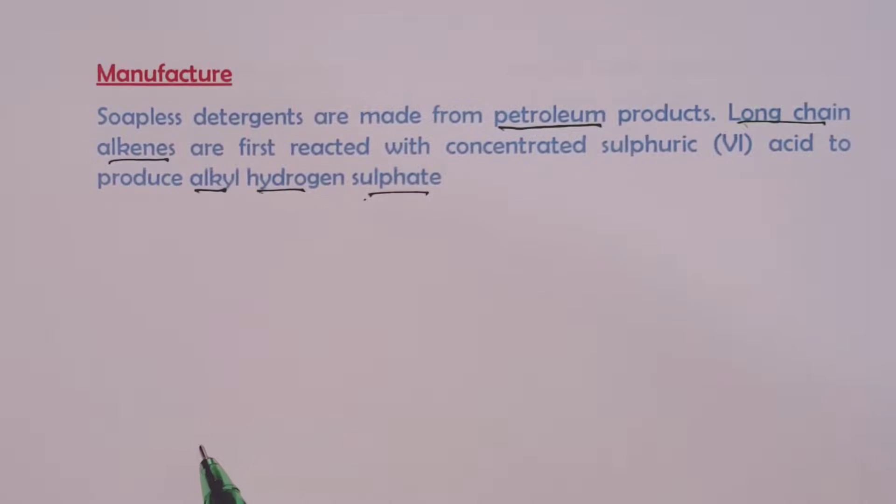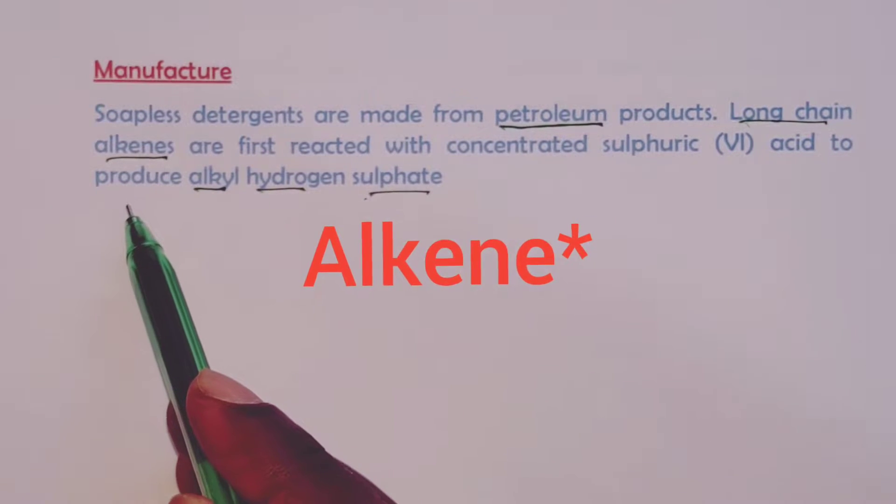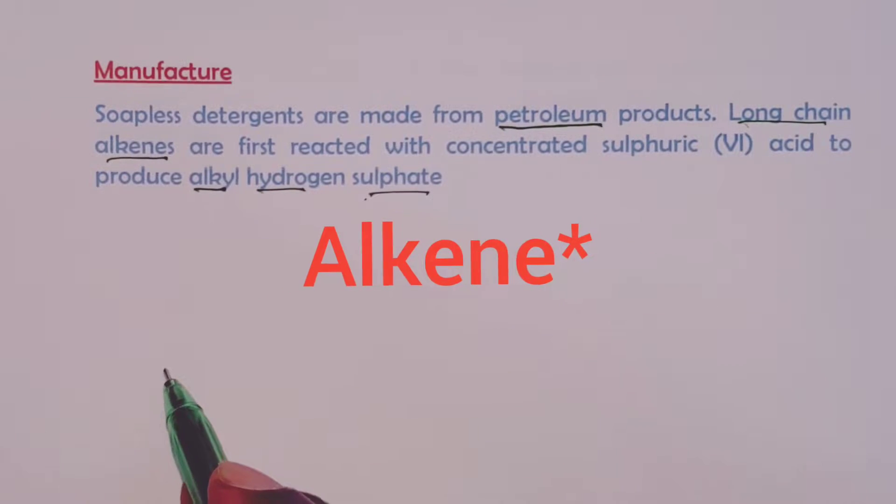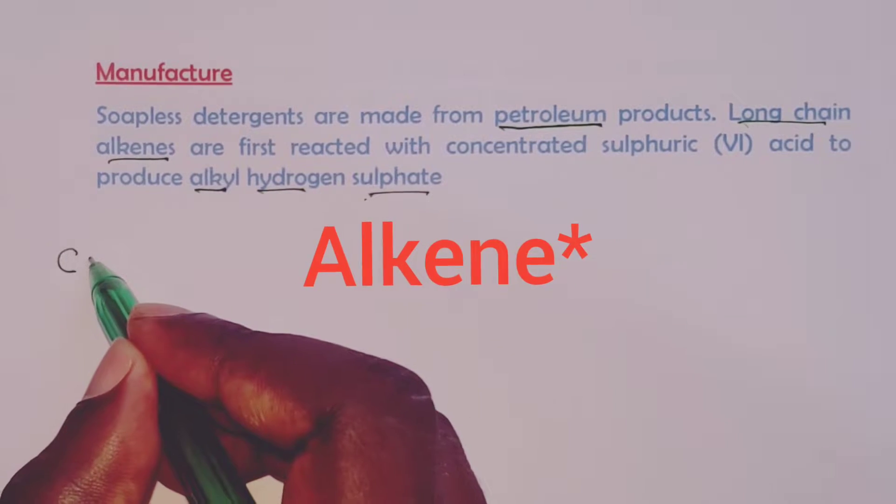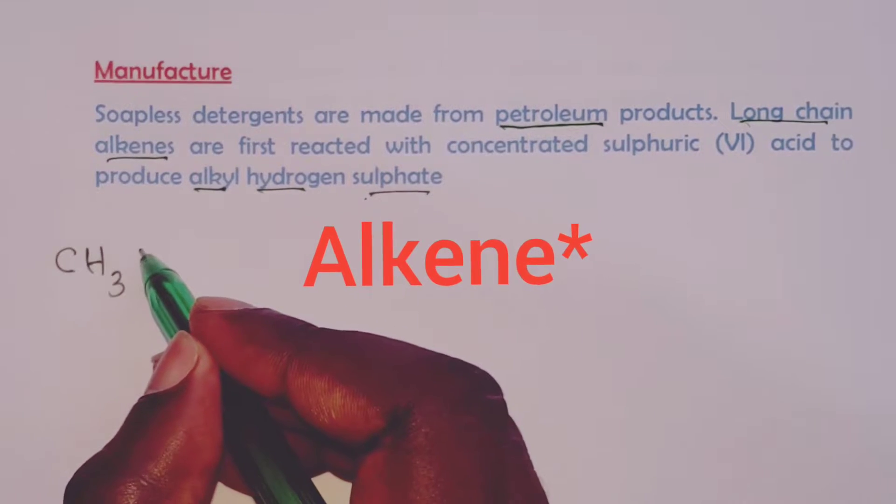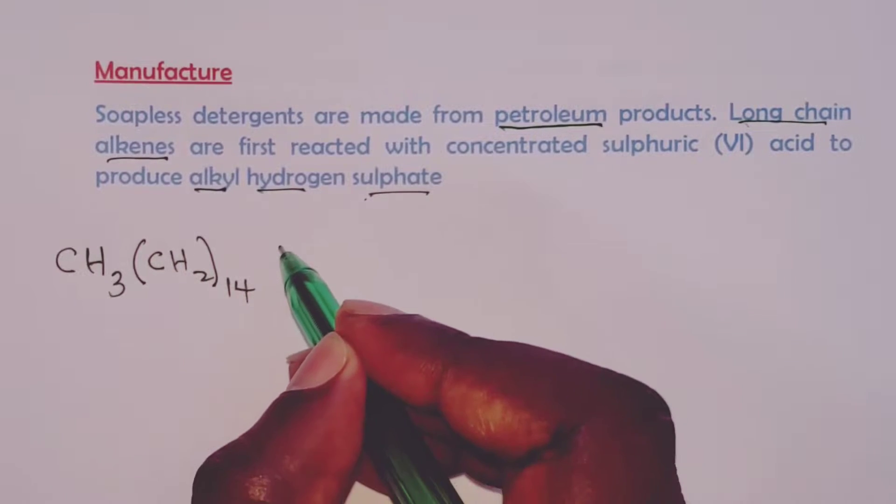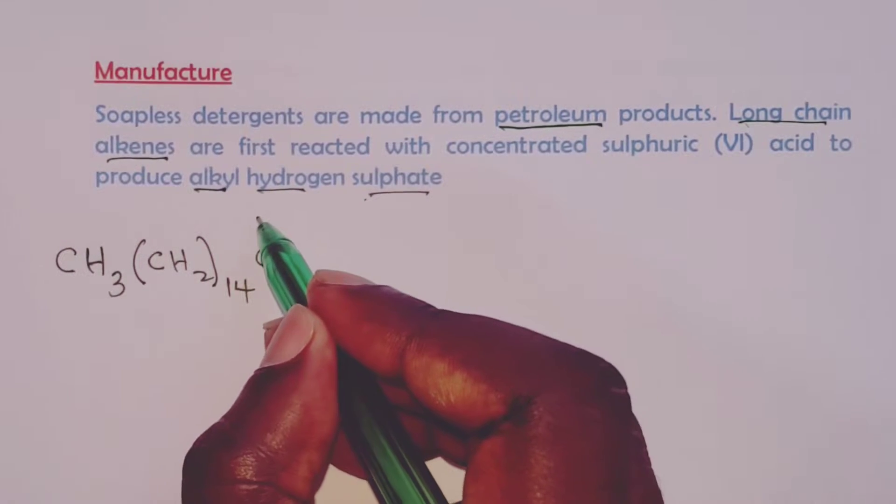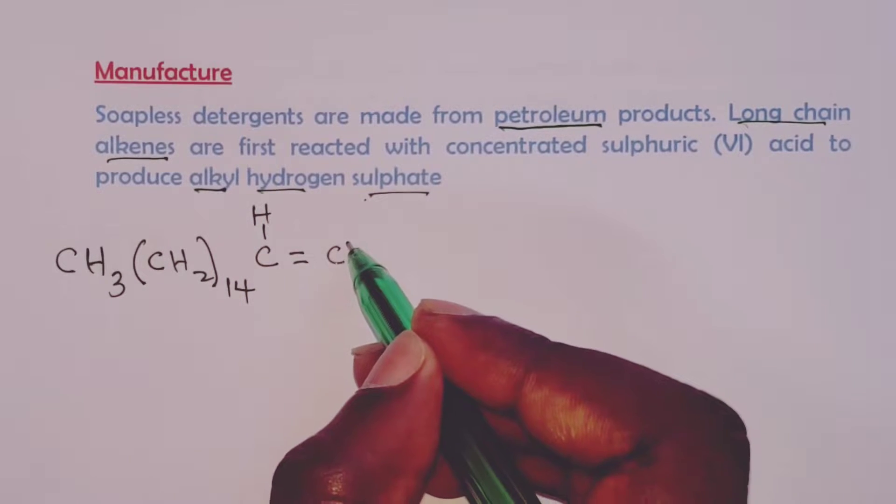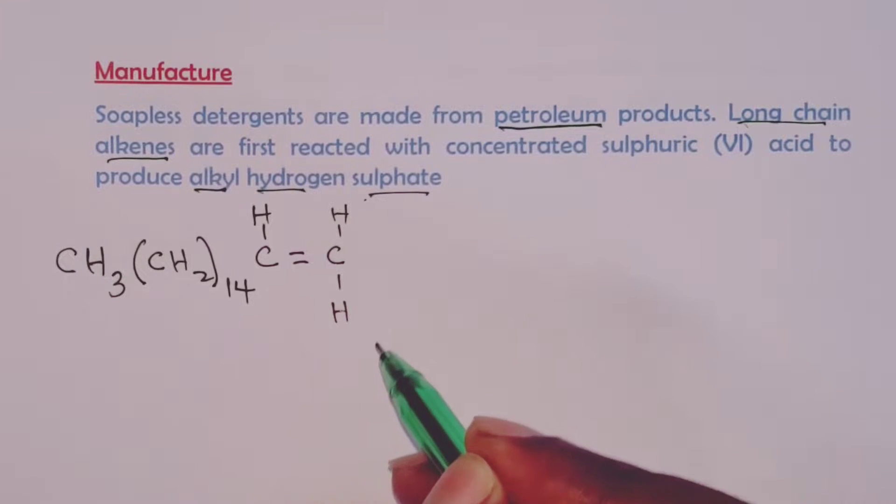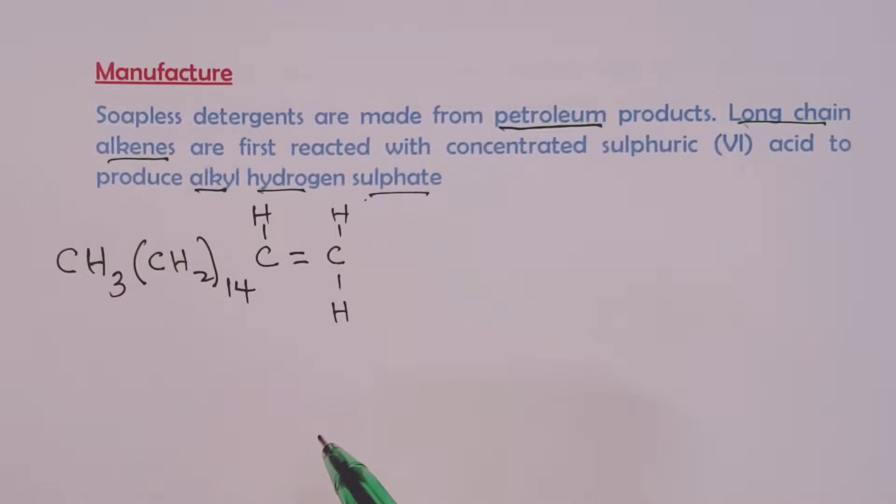So for this video, we want to demonstrate the manufacturing process using a long-chain alkene with 17 carbons. So we shall have our long-chain alkene having the structure CH3, CH2 14 times, then we have CH double bond CH and another H. This becomes our long-chain alkene with 17 carbons. There is one, then we have 14 making 15, 16, and 17.